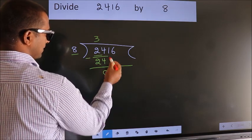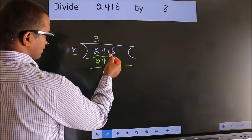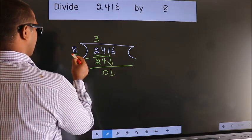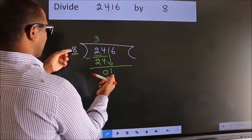After this, bring down the beside number. So, 1 down. Here we have 1, here 8. 1 is smaller than 8.